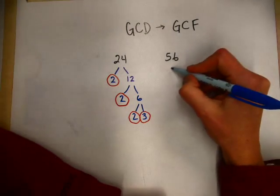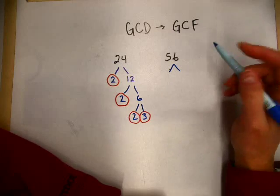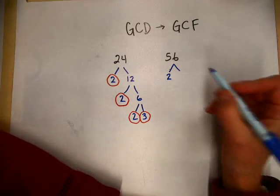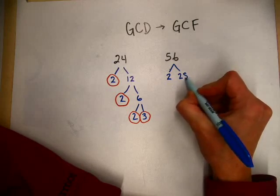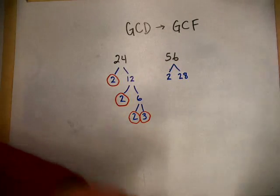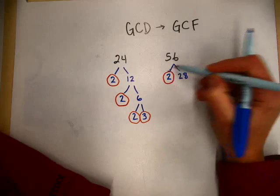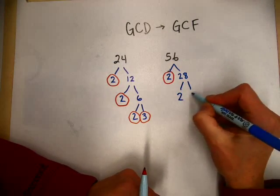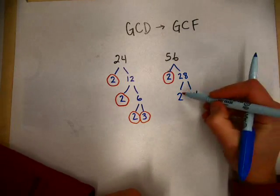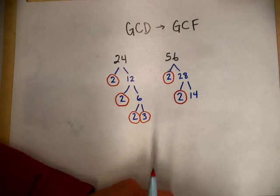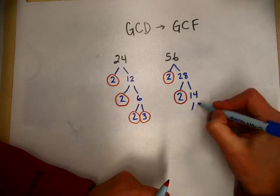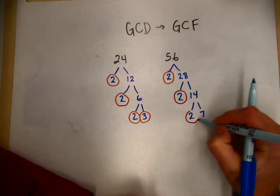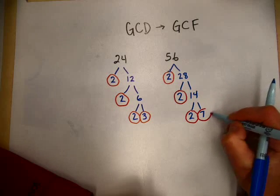Now I'm going to do 56. I'm going to stick with 2. Let's see—2 times 28. Circle my 2. And then 28: 2 times 14. Circle my 2. And 14 is 2 times 7. I'm going to circle my 2 and my 7 because 7 is also prime.